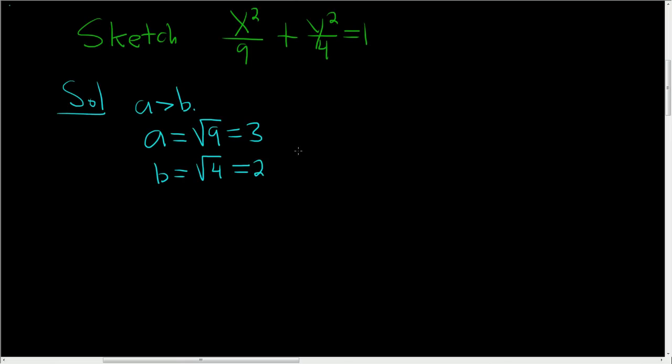Alright, so a is bigger than b, and why does that matter? Well, if the a squared term is under your x term, your major axis is horizontal. So if the bigger number is under your x squared term, the major axis is horizontal. If the bigger number is under your y squared term, the major axis is vertical. So in this case, a is 3, and it's under the x squared term. So the major axis is horizontal.